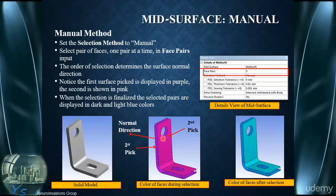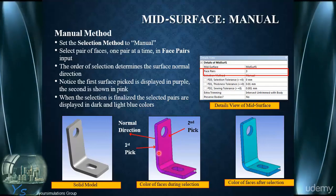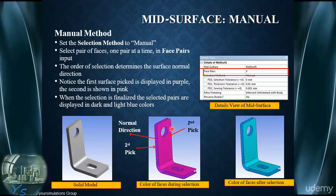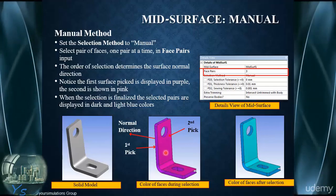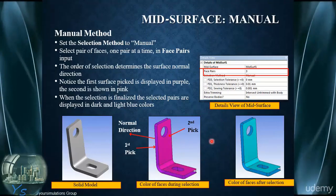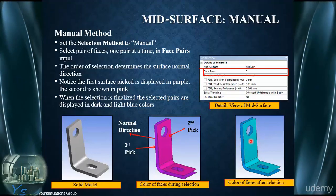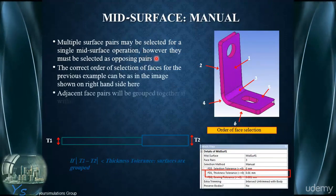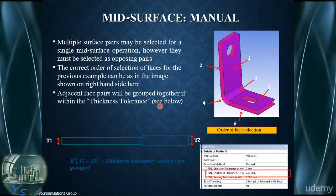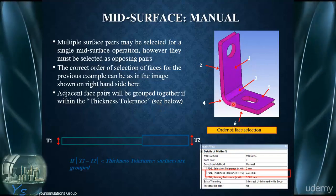The first surface that's picked is shown in purple, as shown in the example at the bottom of the screen. The subsequent second face chosen for that face pair is shown in pink. So we can see a set of purple and pink faces. Once we finalise the selection of the pairs for mid-surfacing, their display is shown in dark and light blue colours, as shown on the right-hand side. It's possible to select multiple face pairs for a single operation, but they must be selected as opposing pairs, as shown on the right-hand side.